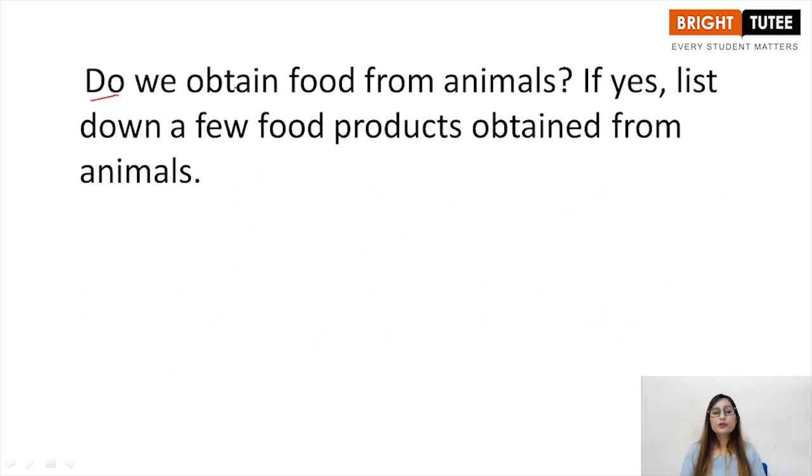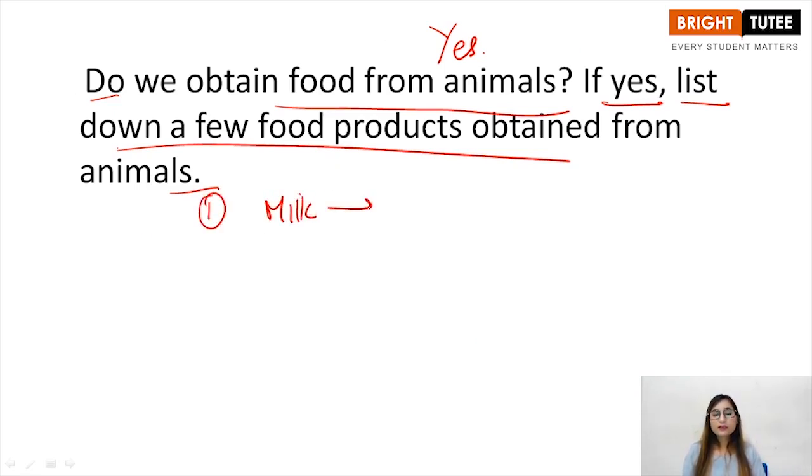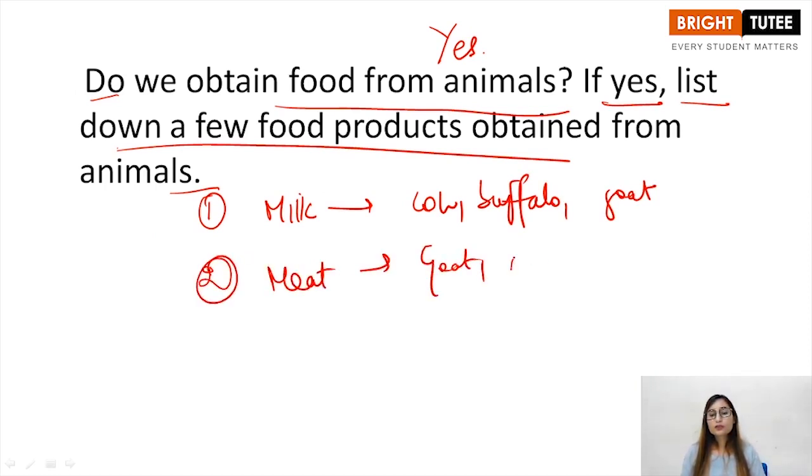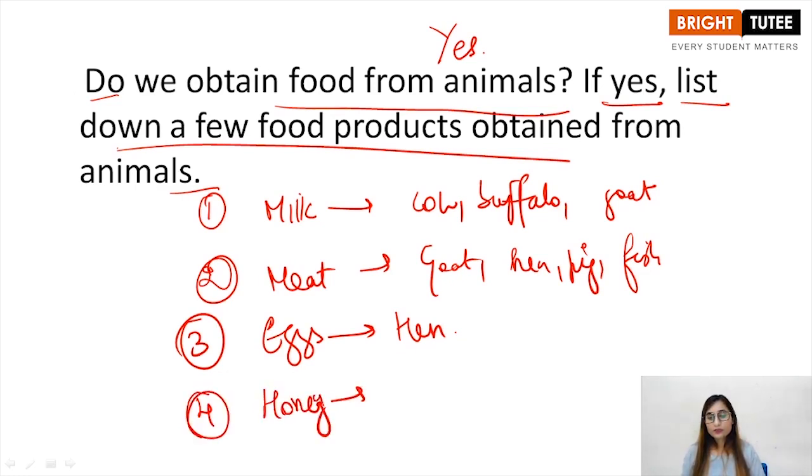Do we obtain food from animals? Yes, we obtain food from animals. If yes, list down a few products obtained from animals. Let's list down some products. First one is milk, that is obtained from cow, buffalo and goat. Second being meat, which is obtained from goat, hen, pig, fish. Third is eggs, which are obtained from hen. And fourth is honey, which is obtained from honeybee. These are the four kinds of products obtained from different animals. So these were the important questions for the last topic of this chapter.